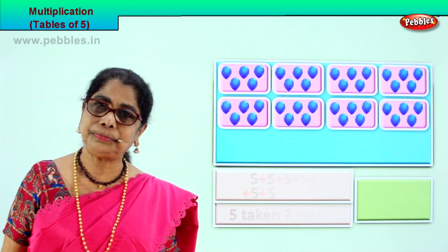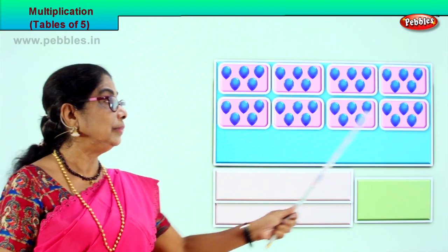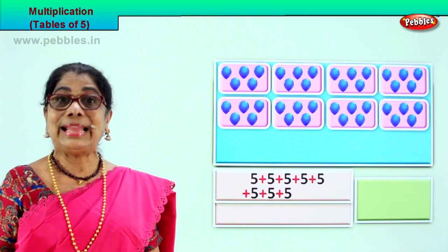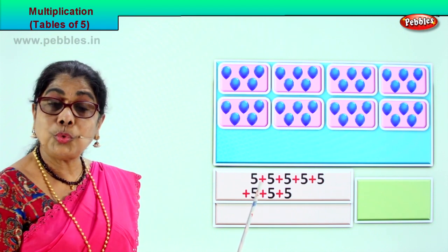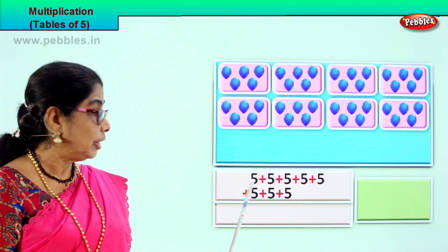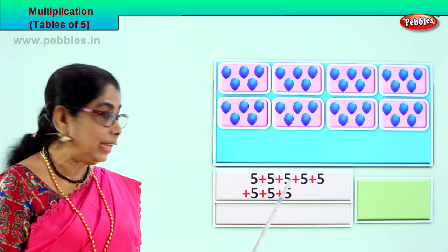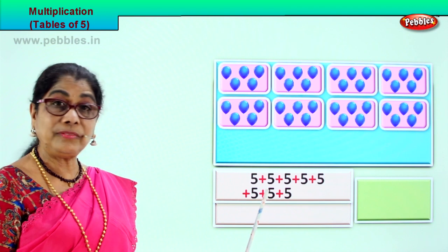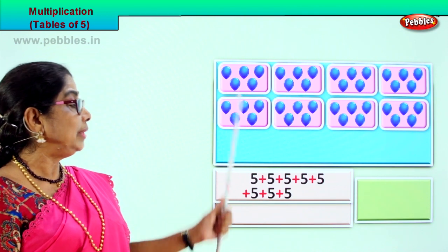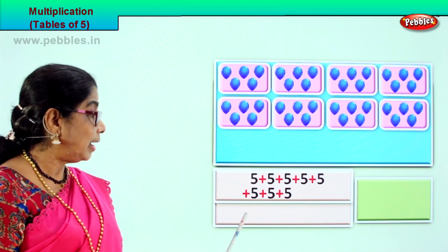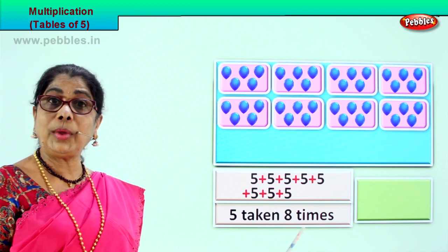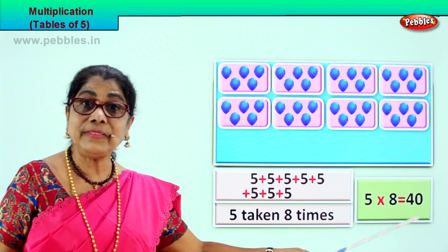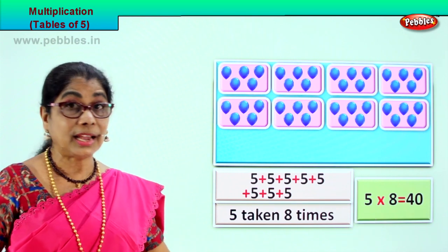Let's look at another grouping of five — one, two, three, four, five, six, seven, eight. How many times five taken? Eight times. Multiplication is repeated addition. So we are going to add five eight times: five plus five, ten. Plus five, fifteen. Plus five, twenty. Plus five, twenty-five. Plus five, thirty. Plus five, thirty-five. Plus five, forty. Five into eight is equal to forty. Five eights are forty.